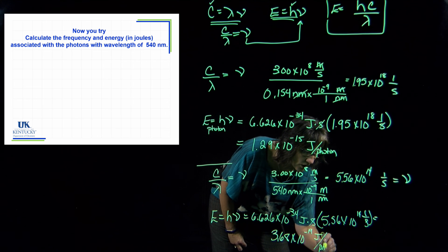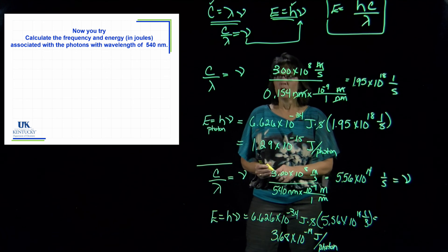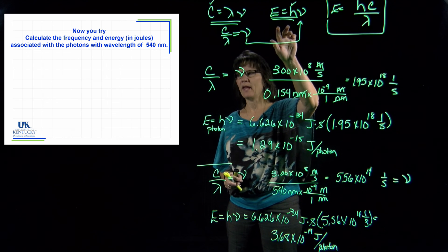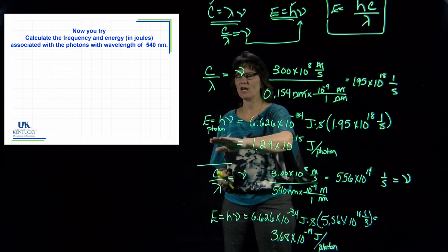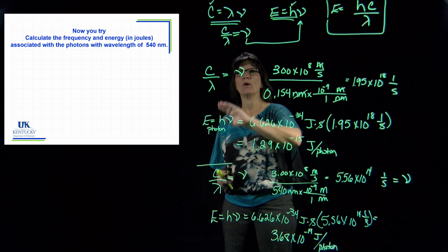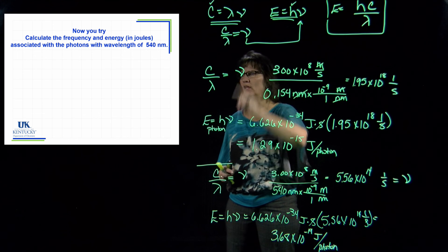So Einstein and Planck's work got us that equation. That equation will give us the energy of a photon, and if we know any one of those three variables—wavelength, frequency, or energy—you can get the other two.